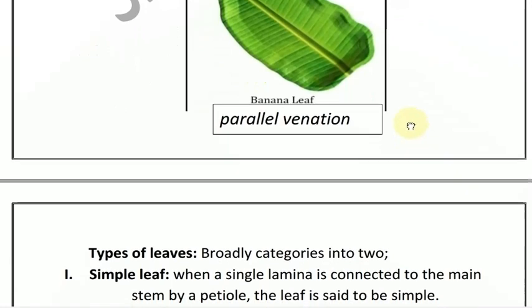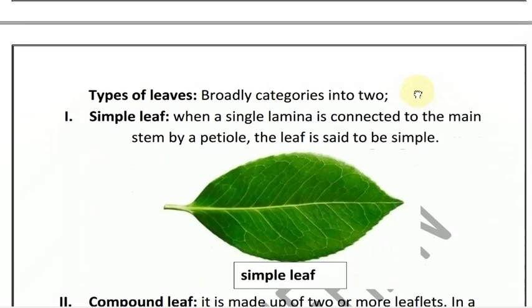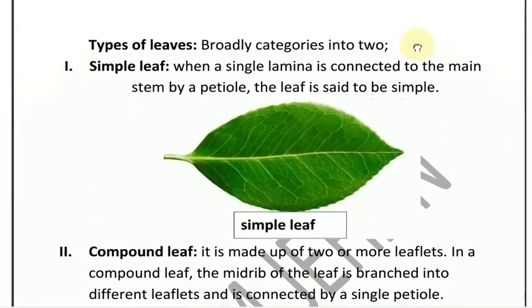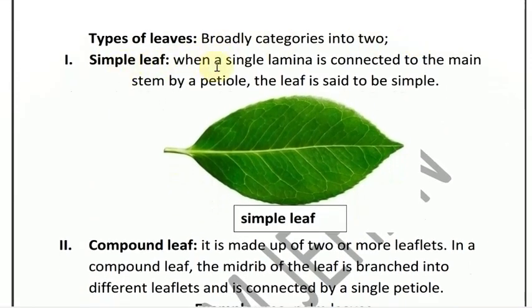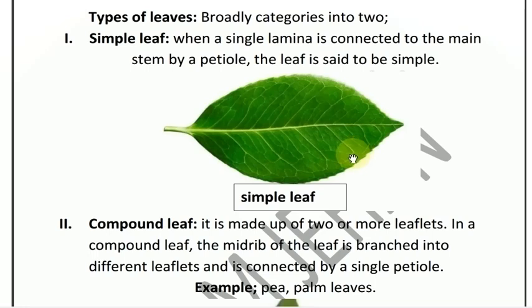Types of leaves: The leaves are broadly divided into two categories: simple leaves and compound leaves. In simple leaf, a single lamina is connected to the main stem by a petiole. This is shown in the diagram.